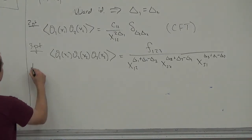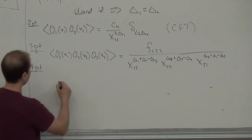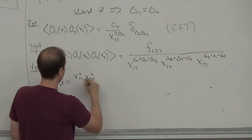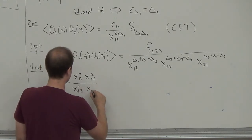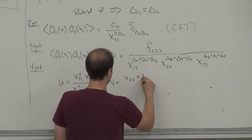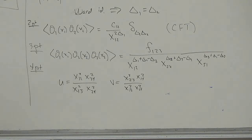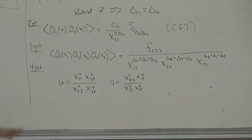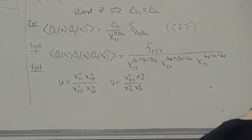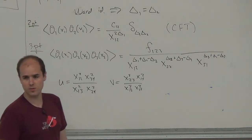The story for a four-point function is different. At four points, there exist what are called conformal cross ratios — we can make ratios of distances between different points, constructed so that they are invariant under conformal transformations. The omega factors cancel in these ratios. This means that in a four-point function, we can have an arbitrary function of these conformally invariant variables.